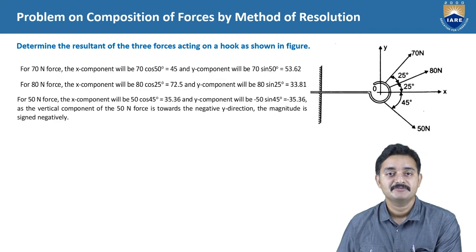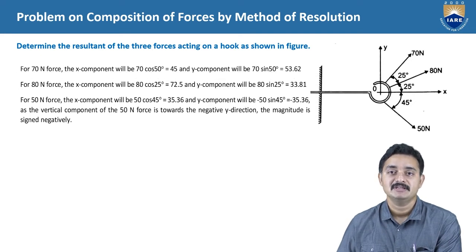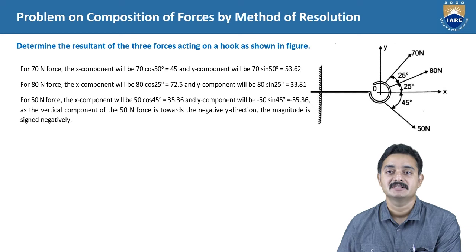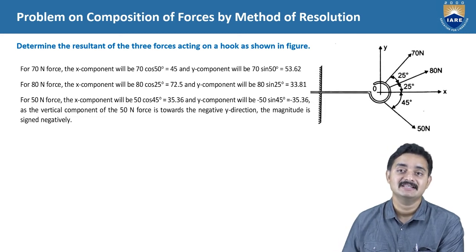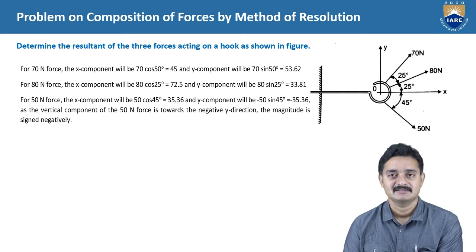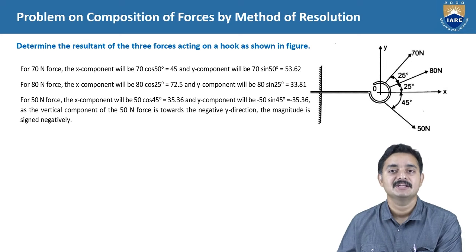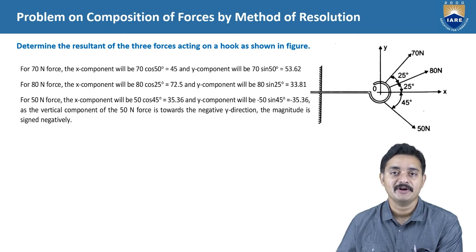Also, for the 50 N force, the x-component will be 50 cos 45, which gives the answer as 35.36, and the y-component will be minus 50 sin 45 degrees. Why have we placed a negative symbol here? Because this 50 N force is acting downwards; when you resolve this force into components, the horizontal component will be towards the positive x-axis direction, whereas the vertical component will be acting in the vertically downward direction, which is the negative y-axis direction. So we take it as a negative force component, giving a value of minus 35.36.